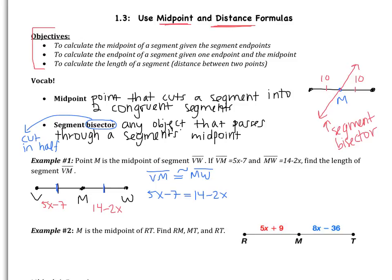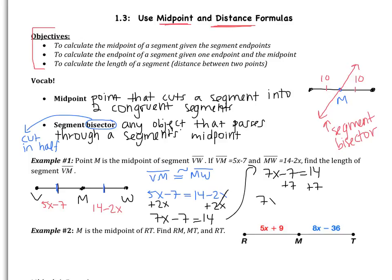Solving: I add 2x to both sides to get 7x minus 7 equals 14. Then I add 7 to both sides to get 7x equals 21, so x equals 3. The question asks for the length of VM, so VM equals 5 times 3 minus 7, which is 15 minus 7, giving VM equals 8.